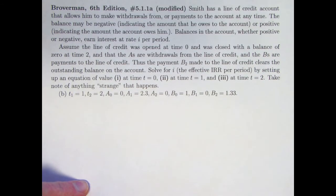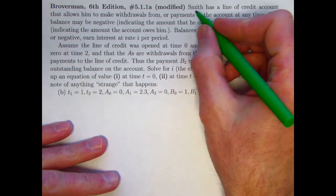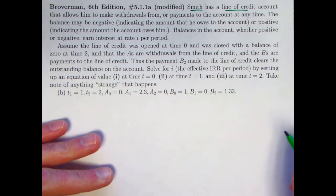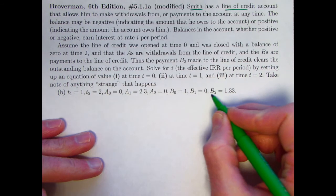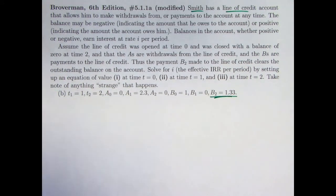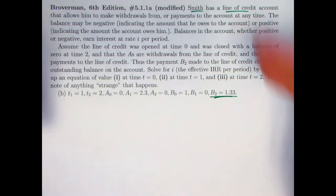And what this is ultimately going to illustrate is that the internal rate of return is not really the most appropriate thing to use for all kinds of financial transactions. But it's kind of interesting to think about anyway, and I think it's worth thinking about this in this problem. So here is the problem statement. It's basically the same as last time, Smith having a line of credit account. The only difference is in this very last number here, this B2 is 1.33, whereas in the last video it was 1.32, barely different. I'll let you read it all.